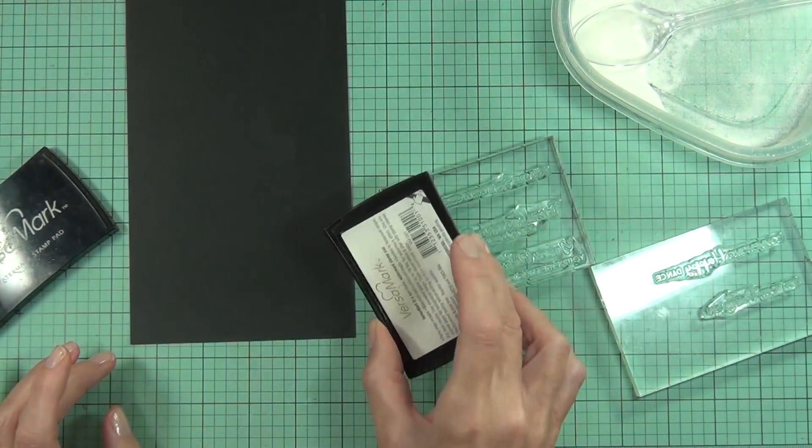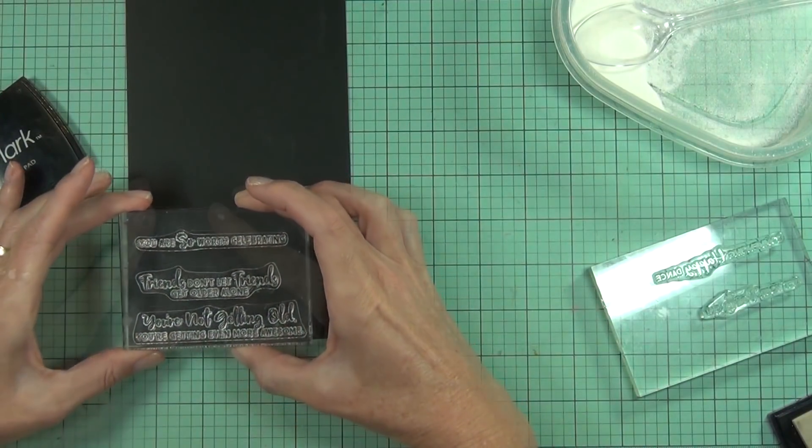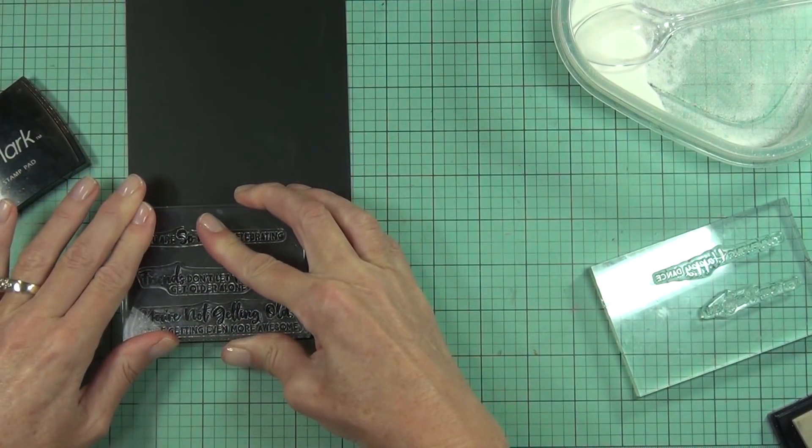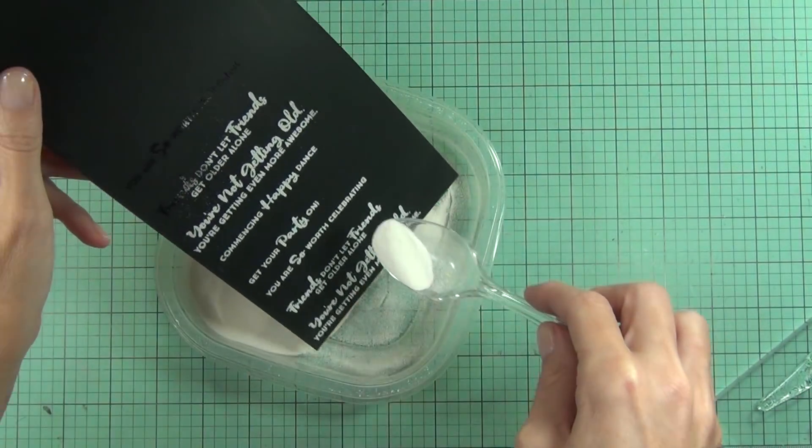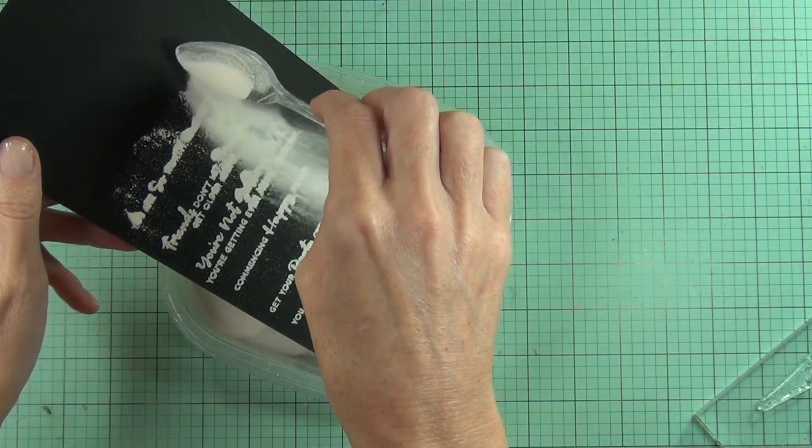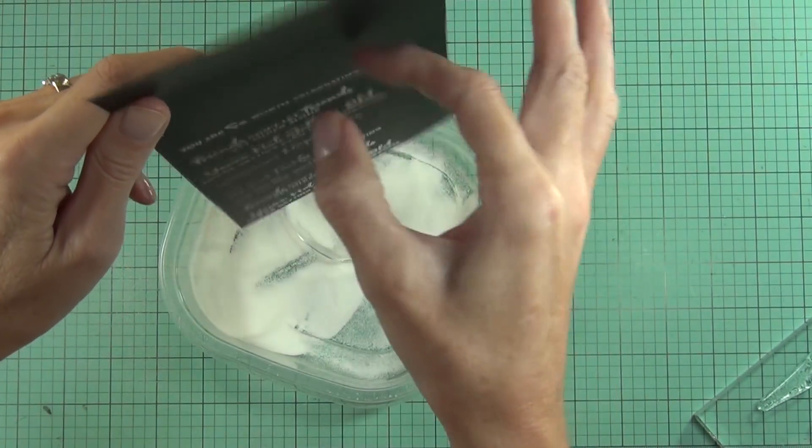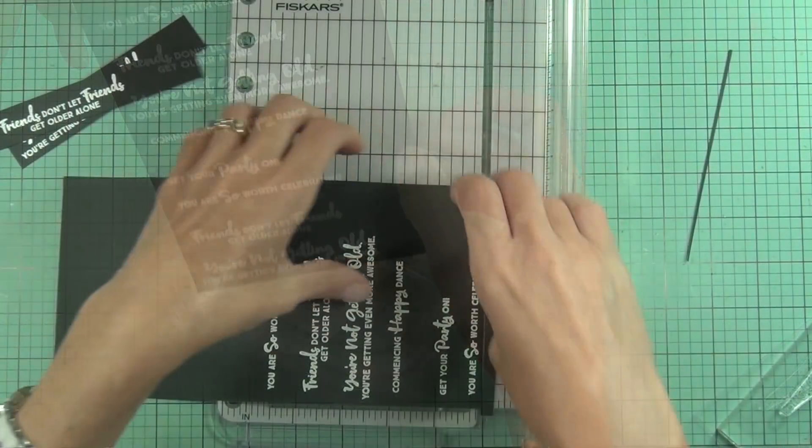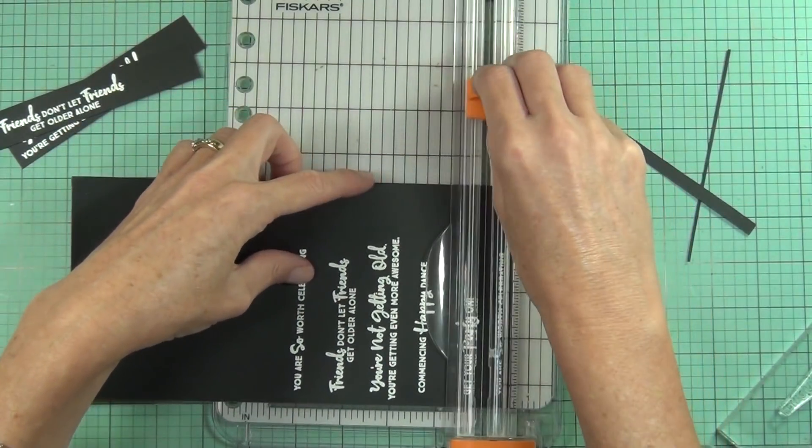I've also seen a lot of people creating lots of sentiments at one time on black cardstock. You know how much I love my white heat embossed sentiments on black cardstock, so I'm going to go with that. I grabbed a heap of sentiments that I really like out of the MFT set called Anything But Basics Birthday Greetings.